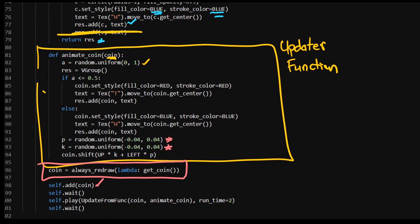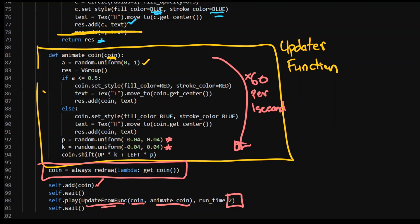We add the coin using always_redraw with get_coin, then call update_from_func with the coin and animate it for two seconds. Every single frame — 60 times per second if you're rendering at 60fps — it's going to pick a random number, determine if we've got heads or tails, and shift the coin by the tiniest nudge up, down, left, or right. Then it does that again and again 60 times per second for a two-second runtime, giving the illusion of about 120 flips of the coin. If you can wrap your head around updater functions, the creativity is endless — you can make things move around and animate on screen in all sorts of cool ways.